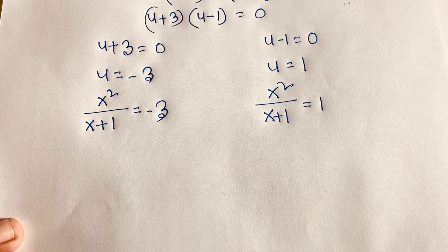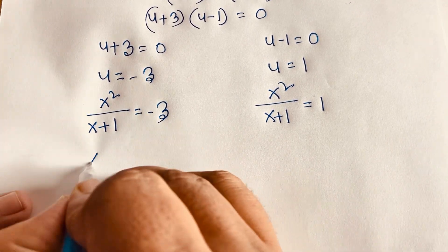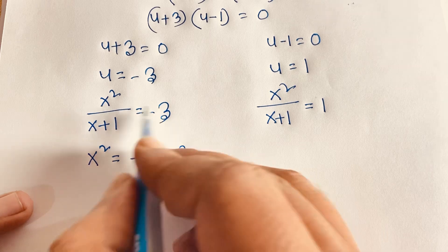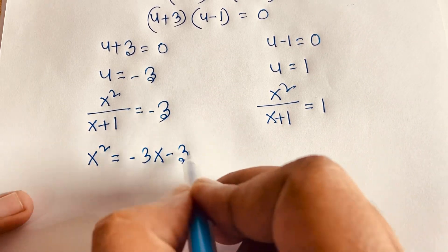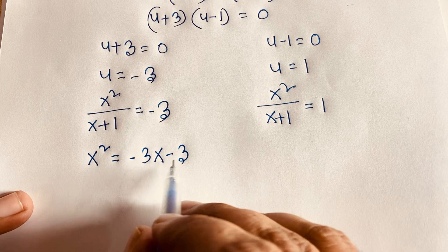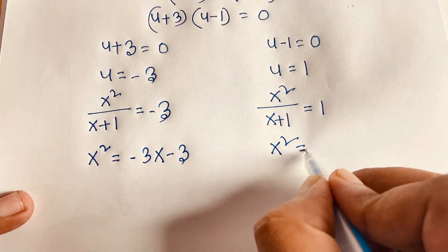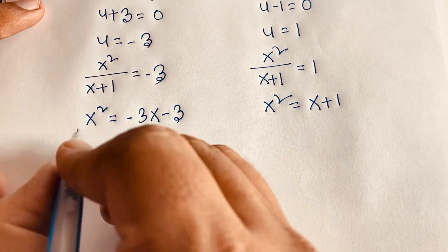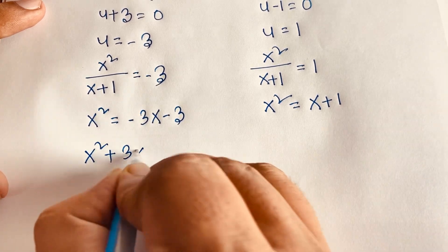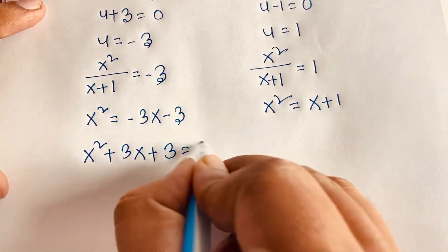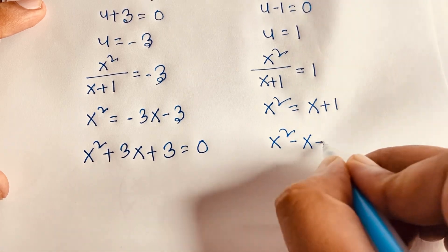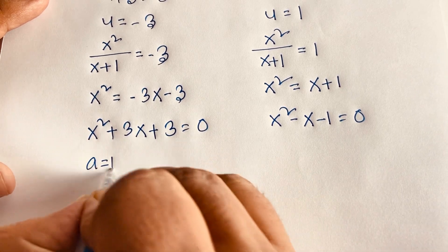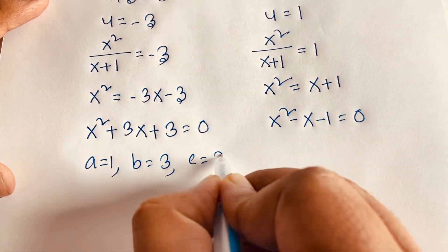For Case 1: x squared = -3(x+1), which gives x squared = -3x - 3, so x squared + 3x + 3 = 0. Here a = 1, b = 3, c = 3. For Case 2: x squared = x + 1, so x squared minus x minus 1 = 0.